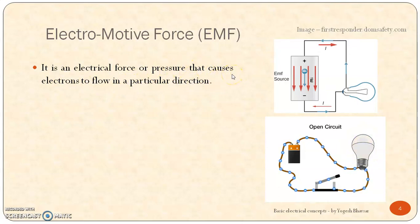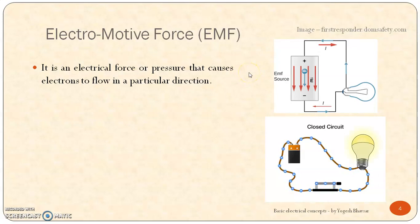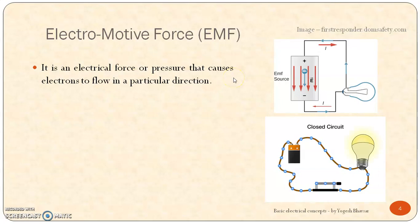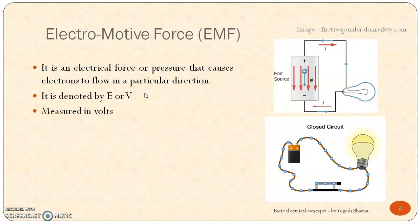We know that electricity can conduct through conductors. Metals have good conductivity and insulators have bad conductivity. So here, as soon as we apply EMF to a conductor there will be a flow of electrons. Due to this electromotive force the electrons will be flowing inside the metal or the conductor. This EMF is denoted by E or V and it is measured in volts.